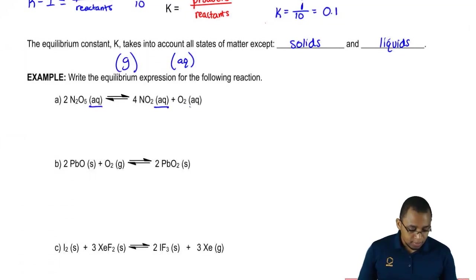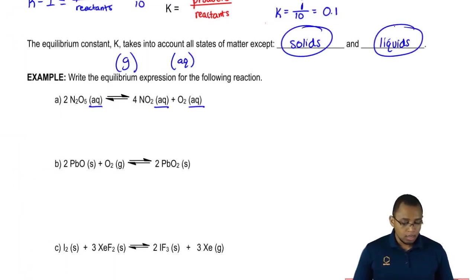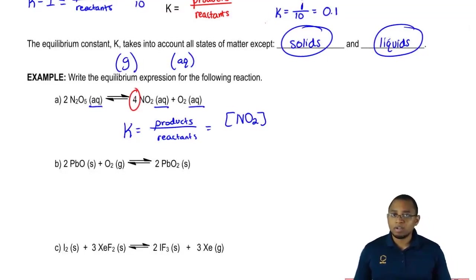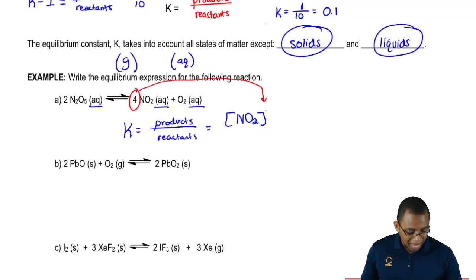It's important to look at the phases because remember, if it's a solid or a liquid, we ignore it. Now, we're going to say here K equals products over reactants. So we're going to have our products as NO2, and remember, you have to use the coefficients in these calculations. The number in front of NO2 is a 4, so that 4 will become the power.